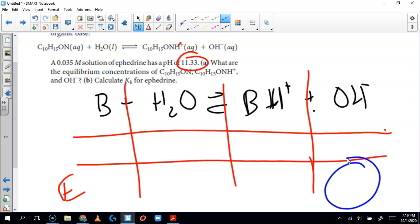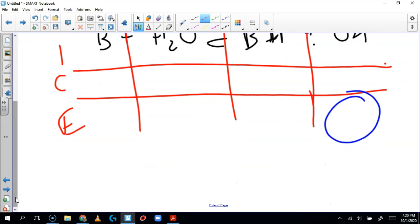So how does this help us with that? Well here's what I'm going to do. I'm going to calculate using the pH. The pH equals 11.33. I'm going to reverse engineer to find the equilibrium concentration of hydroxide ion. And then I'm going to use the stoichiometry or the ICE chart to figure out all the rest.